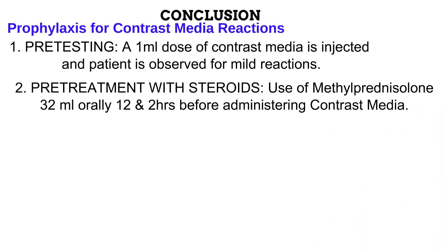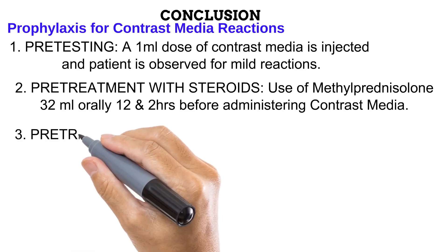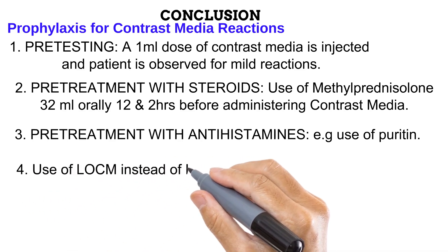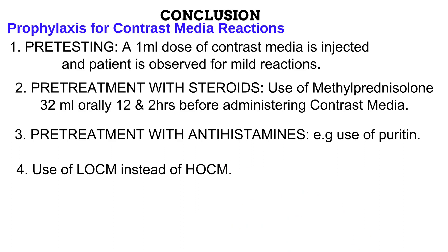Another prophylactic method is pre-treating the patient with steroids. An example of a steroid is methylprednisolone. Administering 32 mg of this orally 12 and 2 hours before giving the contrast media prevents inflammatory reactions. Next is pre-treatment with antihistamines like Benadryl. Earlier in this video, we discussed how histamine released due to contrast media causes inflammatory reactions. Antihistamines prevent histamines from doing this.